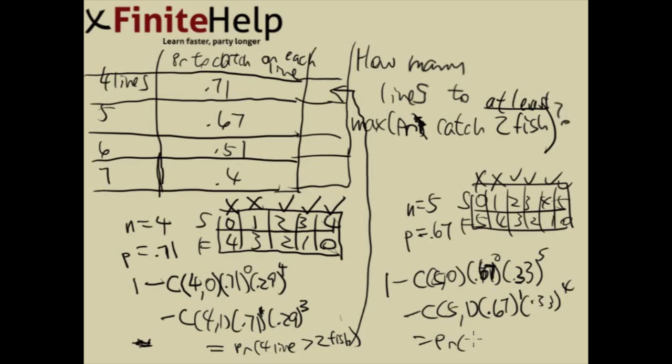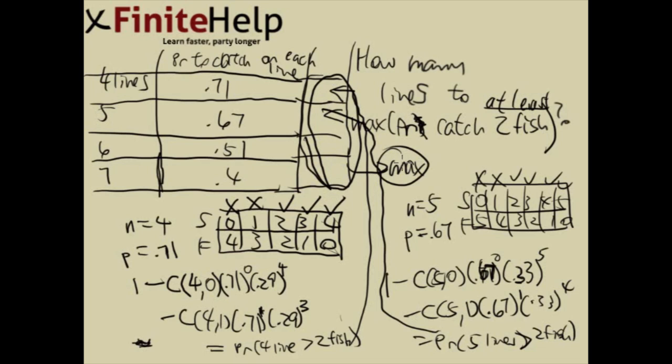And then that is going to come up to some number. That is going to be probability of 5 lines catching at least 2 fish. And then you can put that right here. And then you do all 4 of them. And then all you have to do is find out which one. And everyone will get different numbers. But here is the idea.